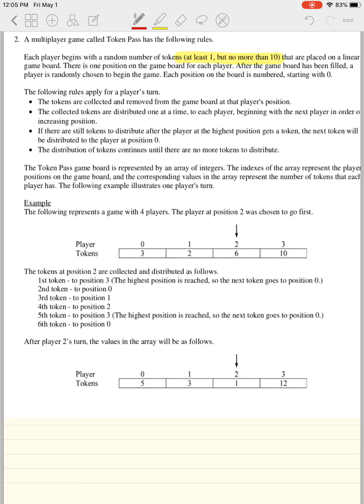Great. Once again, I'm assuming everybody read this, okay? Each position on the board is numbered starting with zero, and the following rules apply for the player's turn. The tokens are collected and removed from the game board at the player's position, okay? The collected tokens are distributed one at a time to each player, beginning with the next player in order, okay? So one thing that we've got to make sure is that we reset, right? Well, that's going to be pretty easy as long as you have a for loop that keeps it in balance. If there's still any tokens after the player at the highest position gets his token, the next token is to be distributed to player zero, okay? The distribution of tokens continue until there are no more tokens.